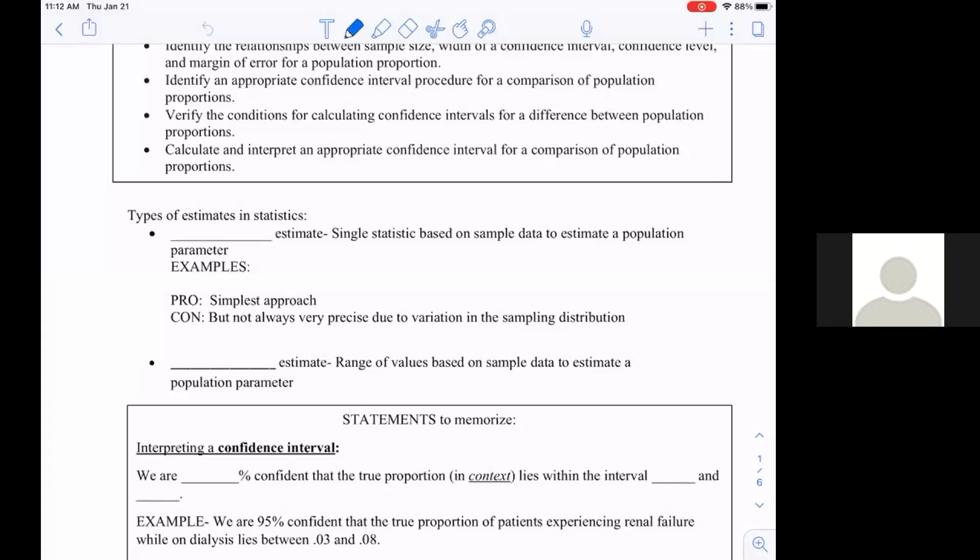Alright, so here we go, the next step in the process. We've talked about the central limit theorem and how we can take a sample and make that applicable to a population. Our means should be roughly the same and our standard deviation changes. From there, we're going to look at polls.